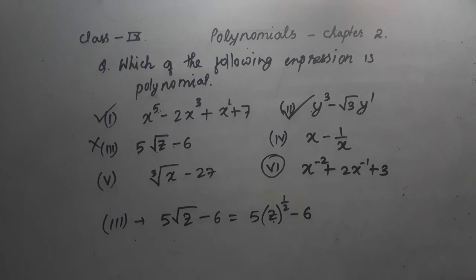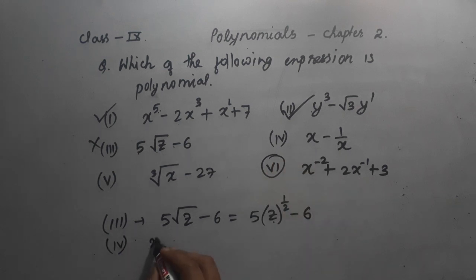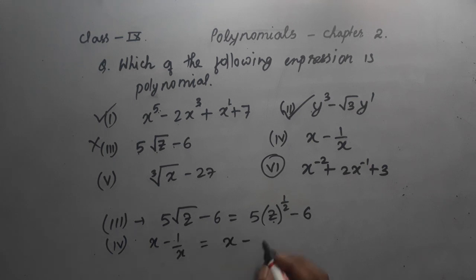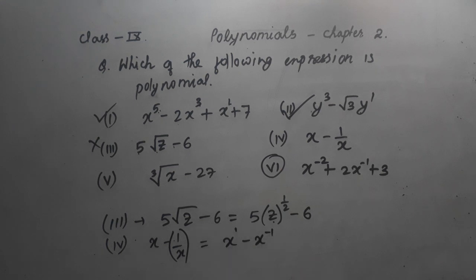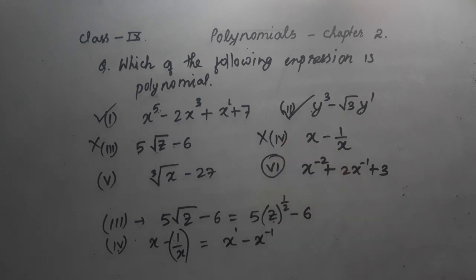For expression 4: x - 1/x. We can write 1/x as x to the power minus 1. So x has power 1, which is a whole number, but the second term has power minus 1, which is a negative number — not a whole number. So this is also not a polynomial.